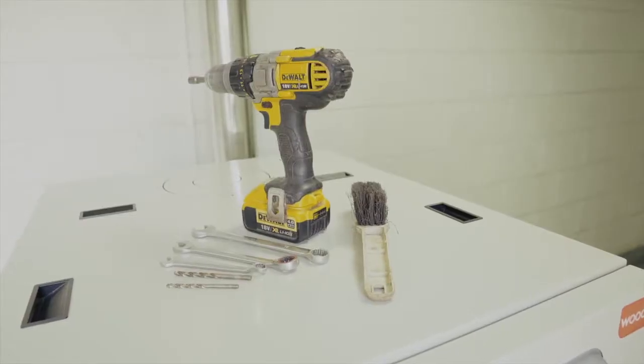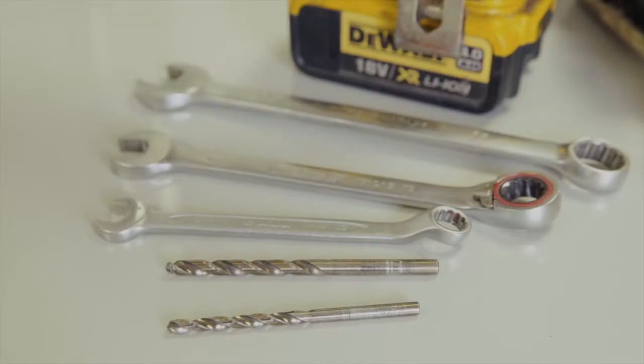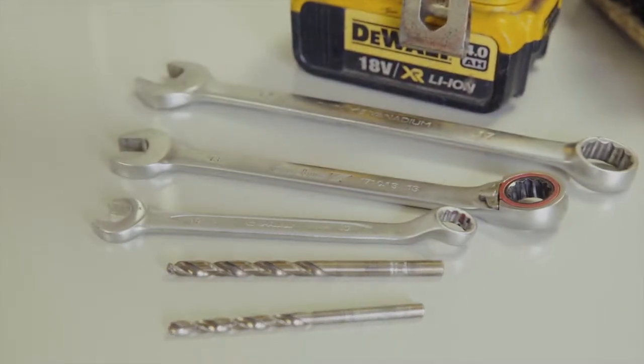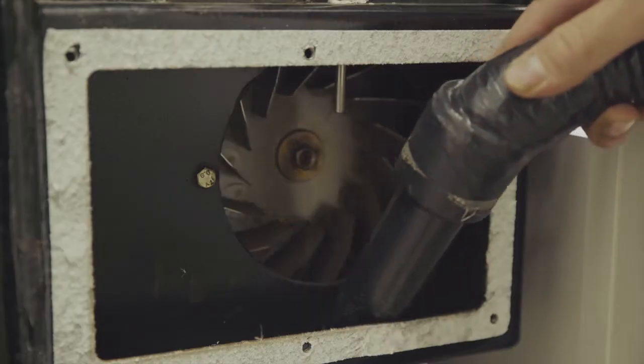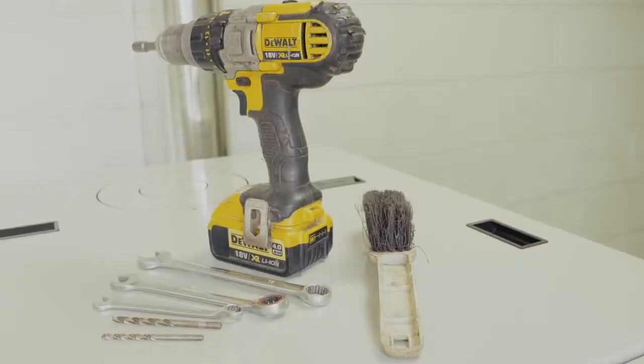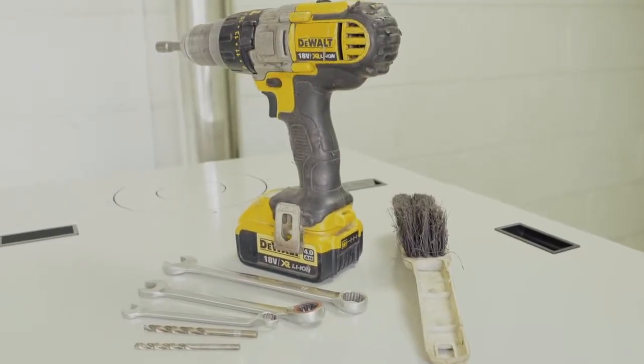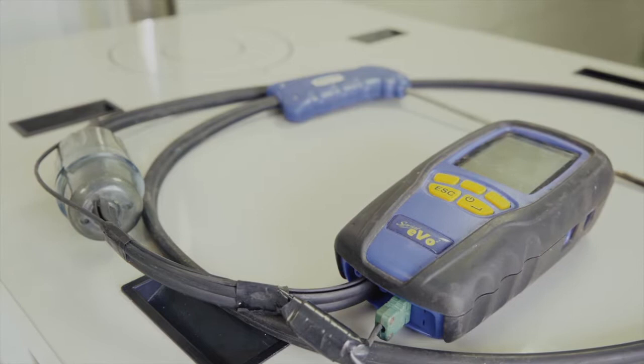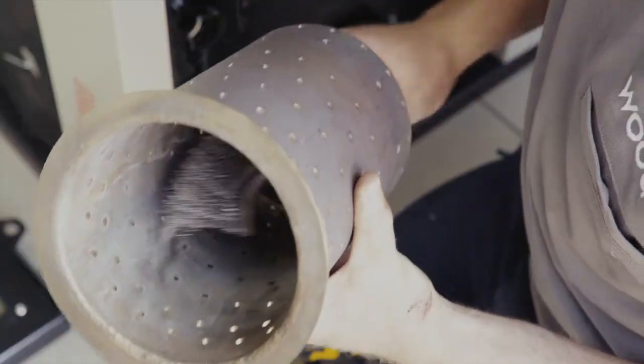Tools that the service engineer will require are 10, 13, and 17 spanner, a brush and vacuum cleaner, brushes to clean the flue, drill with a 4 millimeter and 5.5 millimeter bits, and a flue gas analyzer. Let's go through each of the tasks that need to be undertaken as part of a full service.